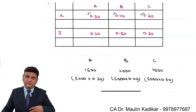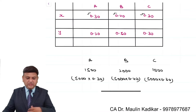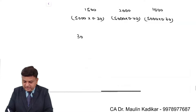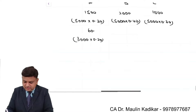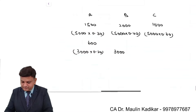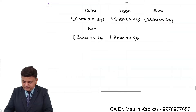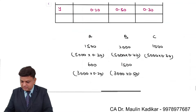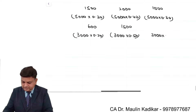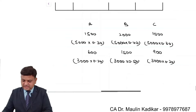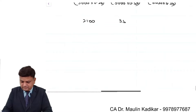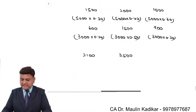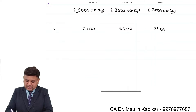For portfolio Y, investing 3000 rupees: 3000 into 0.2 comes to 600, 3000 into 0.5 comes to 1500, and 3000 into 0.3 comes to 900. Summing across both portfolios: for security A it is 1500 + 600 = 2100, for B it is 2000 + 1500 = 3500, and for C it is 1500 + 900 = 2400.